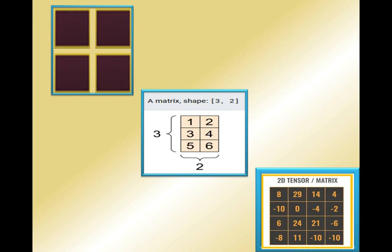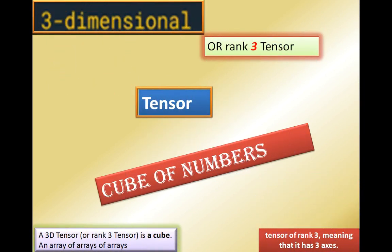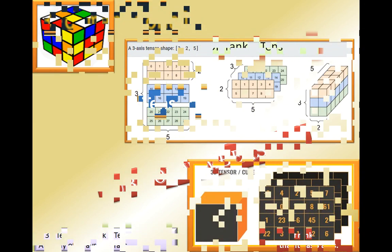Next is the three-dimensional or rank-three tensor. It is a cube of numbers. A 3D tensor is a cube — an array of arrays of arrays. A rank-three tensor has three axes, as can be seen in this diagram.